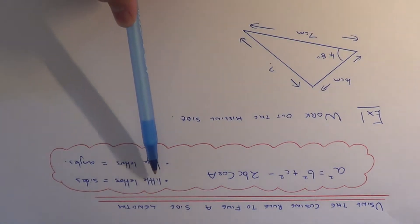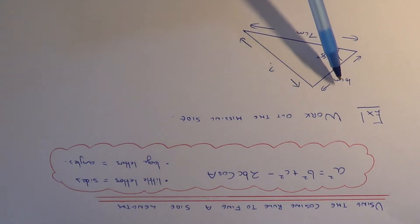It's important to note that the little letters are the side lengths and the large letters are the angles. A lot of people get stuck on when to use the sine rule and the cosine rule. When you use the cosine rule, it's when you're finding a side opposite an angle and you're given the two sides either side of the angle.